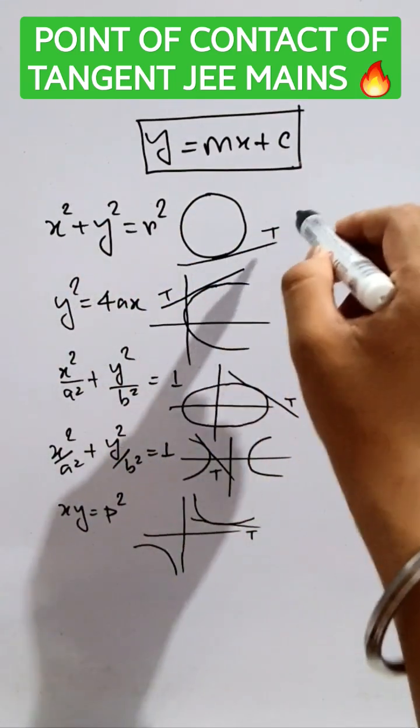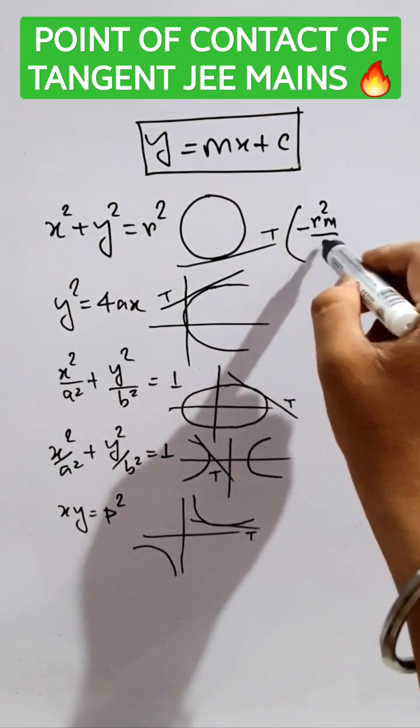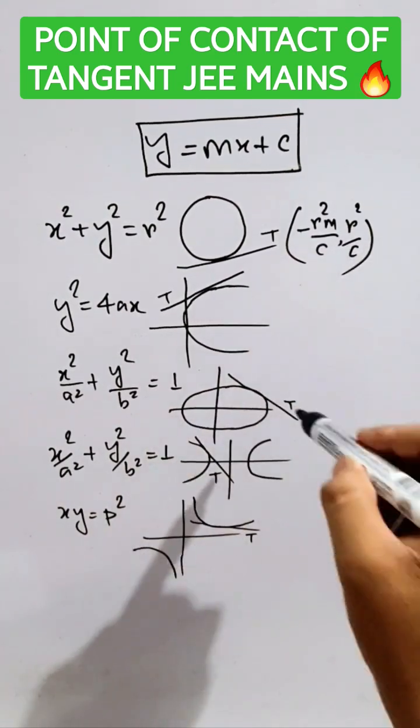So, first of all, this is for the circle. The coordinates of point of contact will be minus R square M by C, comma, R square by C.